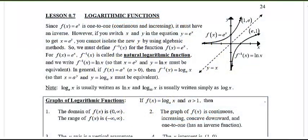You've made it to the last lesson of unit zero review — this is the lesson on logarithmic functions. Hopefully you remember from last lesson that we looked at the function e to the x, and we know it looks like this graph here. It is a continuous and increasing function, so therefore it must also have an inverse.